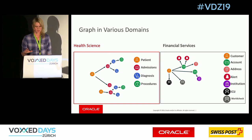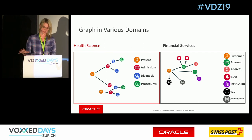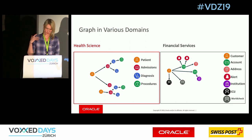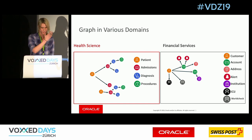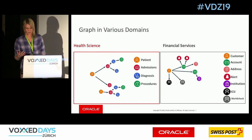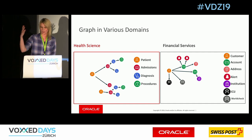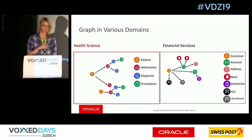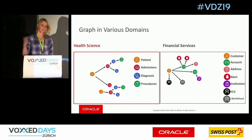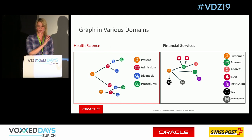We think about how to apply graph algorithms and graph query languages to different domains. Today we focus on health science. We take the standard data model for a domain and build a standard graph model — for healthcare: patients, admissions, diagnoses, procedures. In the financial space, you'd have customers connected to accounts, addresses, alerts, institutions like banks, and connections to blacklists. We try to apply this graph research to various domains.